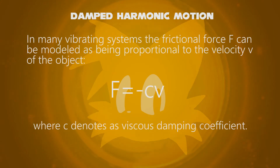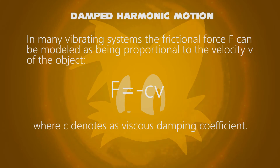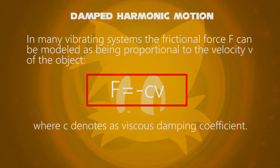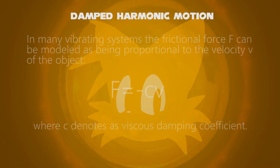In many vibrating systems, the frictional force can be modelled as being proportional to the velocity of the object, that is, f equals minus cv, where c denotes the viscous dampening coefficient.